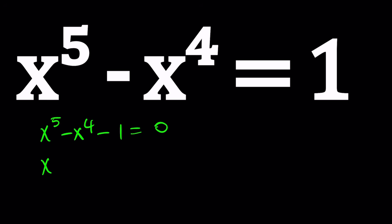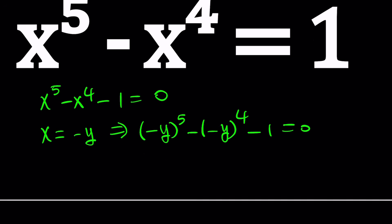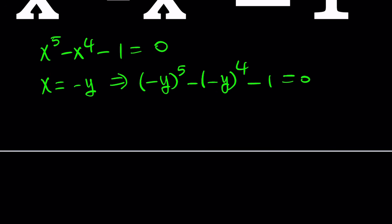Replace x with negative y. So when you do it, x is going to be replaced with negative y. There are double negatives, but don't worry about that — we're going to simplify. When you raise a negative quantity to the fifth power, the minus sign is going to stay, because negative one to the fifth power is negative one.